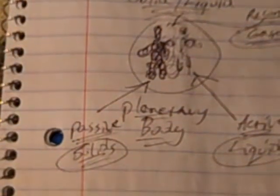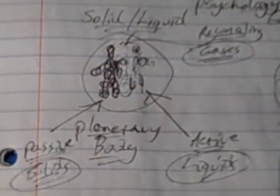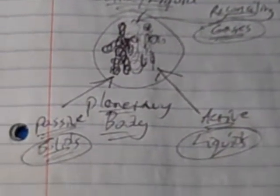What you have is the planetary body, which is composed of solids and liquids. He had this theory of three forces: active, passive, and reconciling. In that sense, the solids are passive, the liquids are active, and the gases that we breathe in are reconciling between the two.